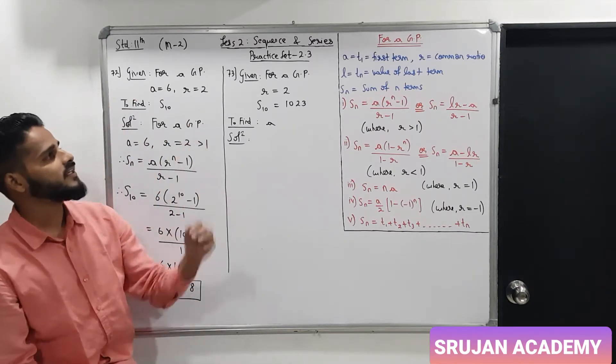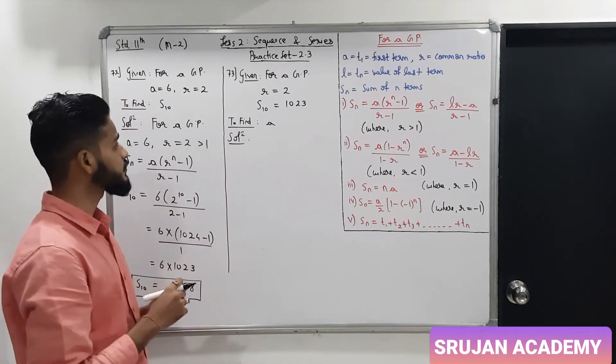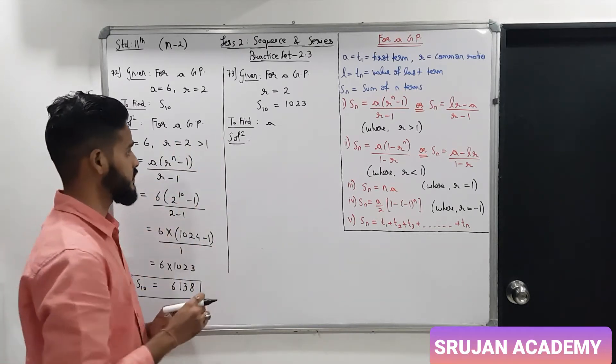Now see, the 73rd sum. Given part is, for a GP, R is 2, common ratio is 2, and S10 is 1023. Now find the value of the first term.